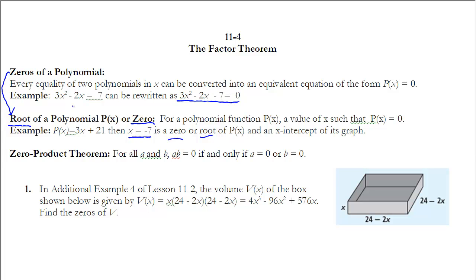Those values graphically will always be the x-intercepts of the polynomial. The last related topic is the Zero Product Theorem, which is a very basic idea: if a × b = 0, then either a = 0 or b = 0. We need this because if a polynomial is written in factored form, each factor is like a number, and if their product equals zero, one of those factors must equal zero — which allows us to find zeros of polynomials.